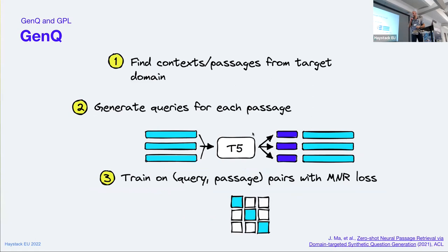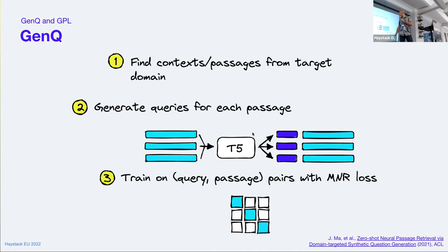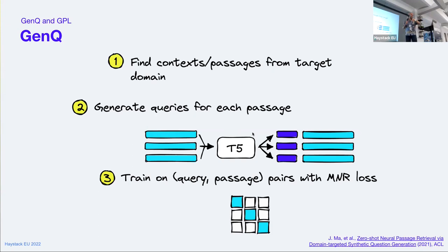We can start by finding some passages from the internet — they don't need to be in pairs at all. Then we just generate queries using a T5 query generation model. After query generation, we have both queries and passages together, and we can apply multiple negatives ranking to fine-tune a model with pretty good performance, as long as those generated queries are of high quality. However, we're prone to poor quality generations, and we need a pre-trained query generation model.